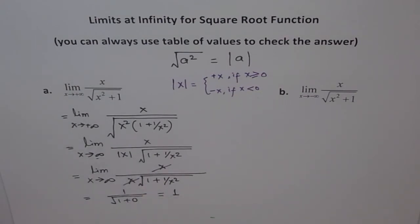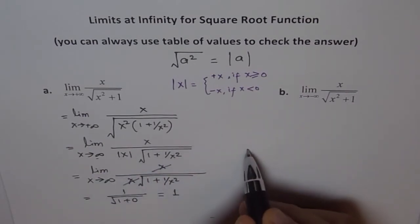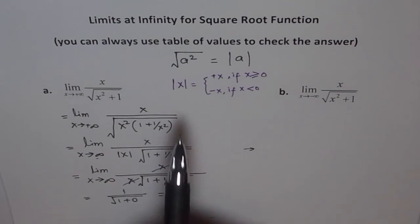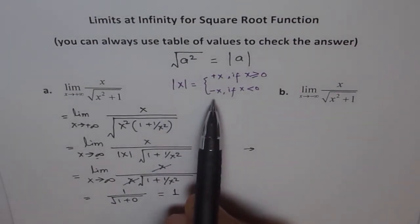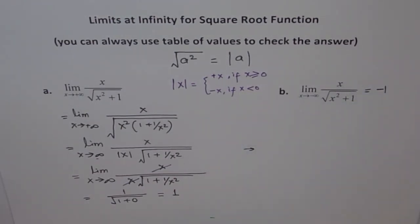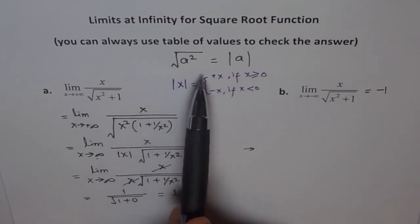Now we'll follow the same process here but the only difference will be at this stage. At this stage we are approaching minus infinity. So when we are approaching minus infinity, from the definition absolute x will be minus x, and therefore the result of this will be minus 1. We can follow the same procedure and then here is the difference and that is a huge difference.